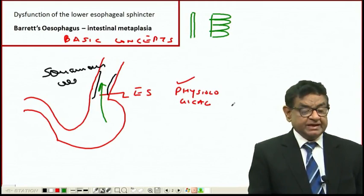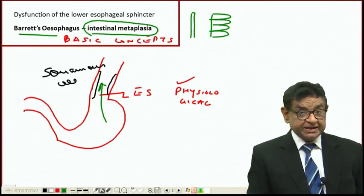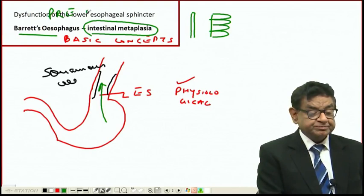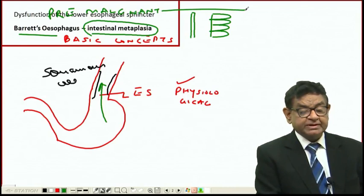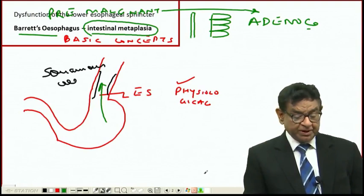This is intestinal metaplasia, known as Barrett's esophagus. It is dangerous because it's a premalignant condition. The common carcinoma that can occur is adenocarcinoma, which is 40 times more common in Barrett's esophagus compared to the normal population.